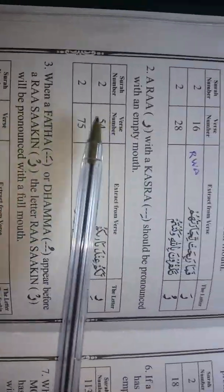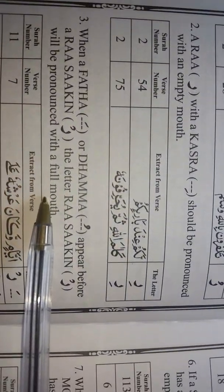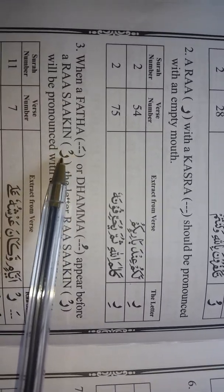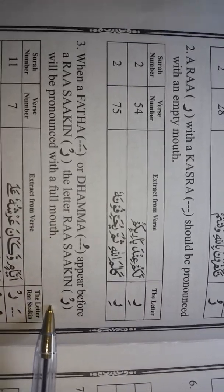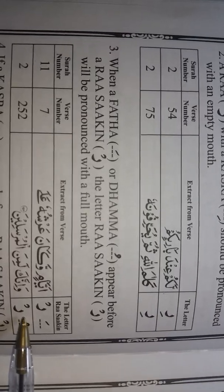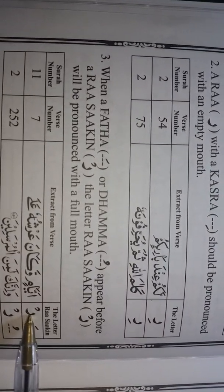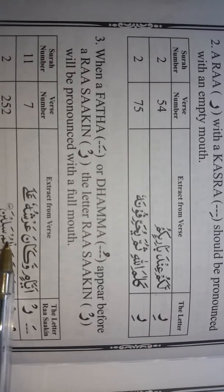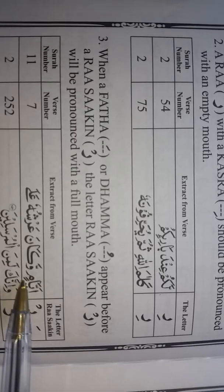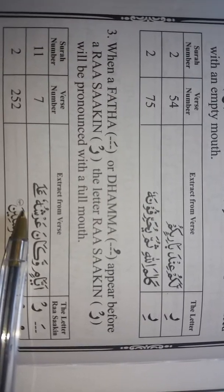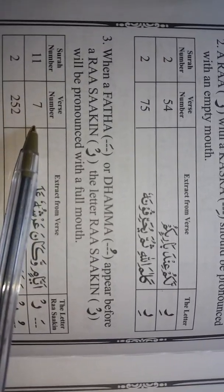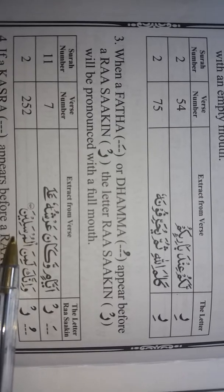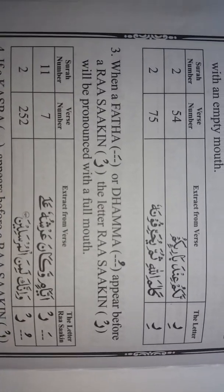The third one — going from Fatha and Kasra, now we go to the next rule: when a Fatha or Dhamma appears before a Ra Sakin — remember Ra Sakin has a little zero on top — the letter Ra Sakin will be pronounced with a full mouth. For example, Fatha with Ra Sakin. And then Dhamma with Ra Sakin: Wa innaka laminal mursalin. That's from Surah number two, verse 252.